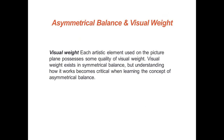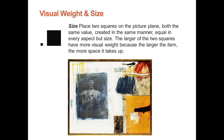Visual weight: each artistic element on the picture plane possesses some quality of visual weight. Visual weight exists in symmetrical balance as well, but it really doesn't become critical to understand until you start looking at asymmetrical balance. Let's start with size. If you place two squares on either side of the picture plane, both the same size and created in the same manner except one is larger, the larger square has more visual weight because it simply takes up more space in the picture plane.